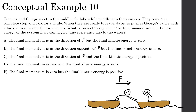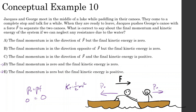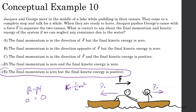Jaquez and George meet in the middle of a lake while paddling canoes. They come to a complete stop and talk for a while. When they're ready to leave, Jaquez pushes George's canoe with force F to separate the two canoes. What is correct about the final momentum and kinetic energy of the system, neglecting water resistance? Before they push off, momentum is zero; after, momentum is still zero — because even though they're both moving, they go in opposite directions and cancel. So final momentum is zero. However, kinetic energy (½mv²) has no direction, so both moving bodies contribute positive KE. The final momentum is zero, but the final kinetic energy is positive.